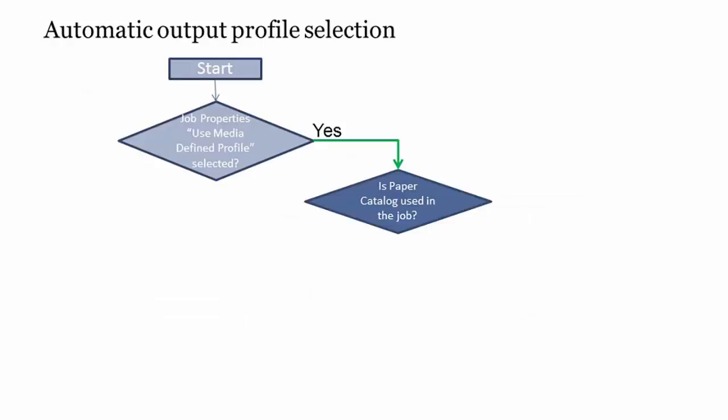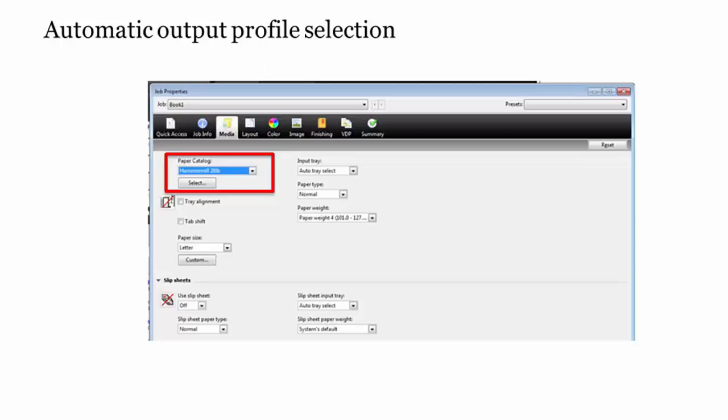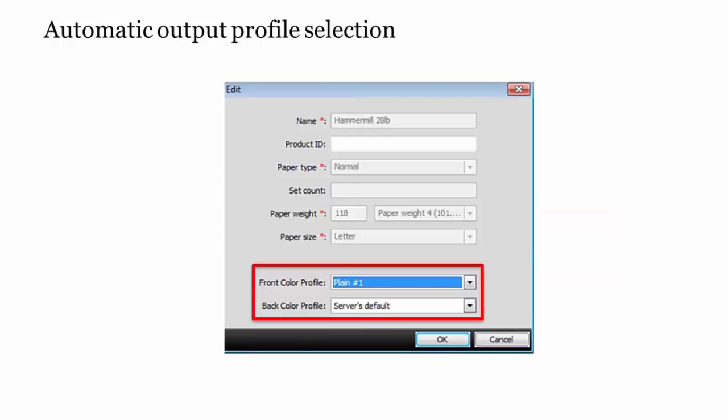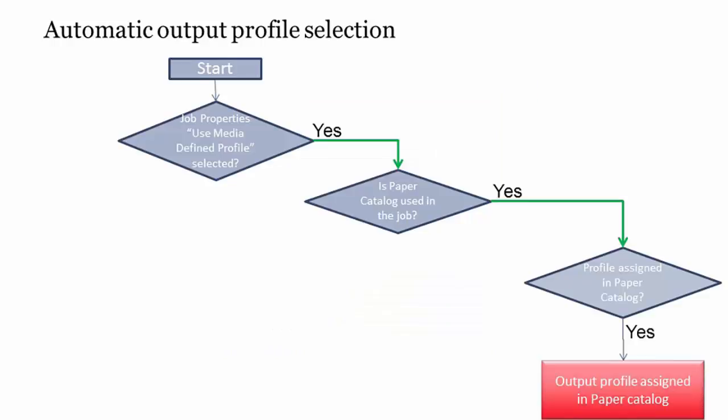If I use Media Defined Profiles, then I need a little help understanding how does the profile get selected. First, if the Use Media Defined Profile setting is selected, we check to see if the Fiery paper catalog is being used by the job. The paper catalog is specified here on the Media tab of the job properties. If I use a paper catalog entry, we'll try to pick the profile from the paper catalog. So the next question is, is there a profile defined in the paper catalog? A paper catalog entry looks like this. And in this example, you can see that I've selected the profile plane number one for the front and back of my sheet. So in this example, the output profile will be selected based on the paper catalog entry and the profiles that are assigned in that entry here.